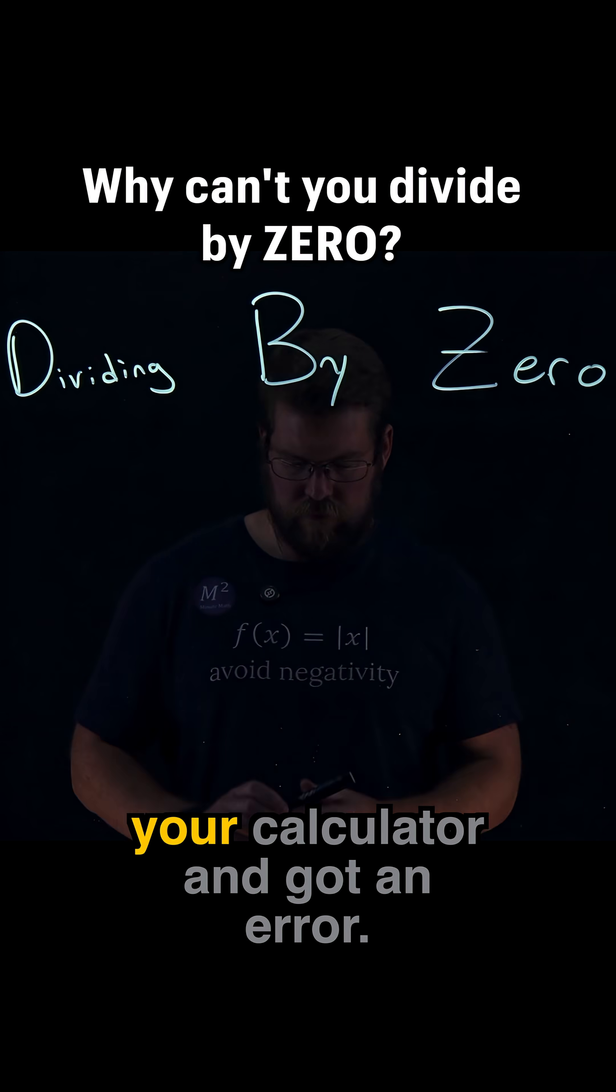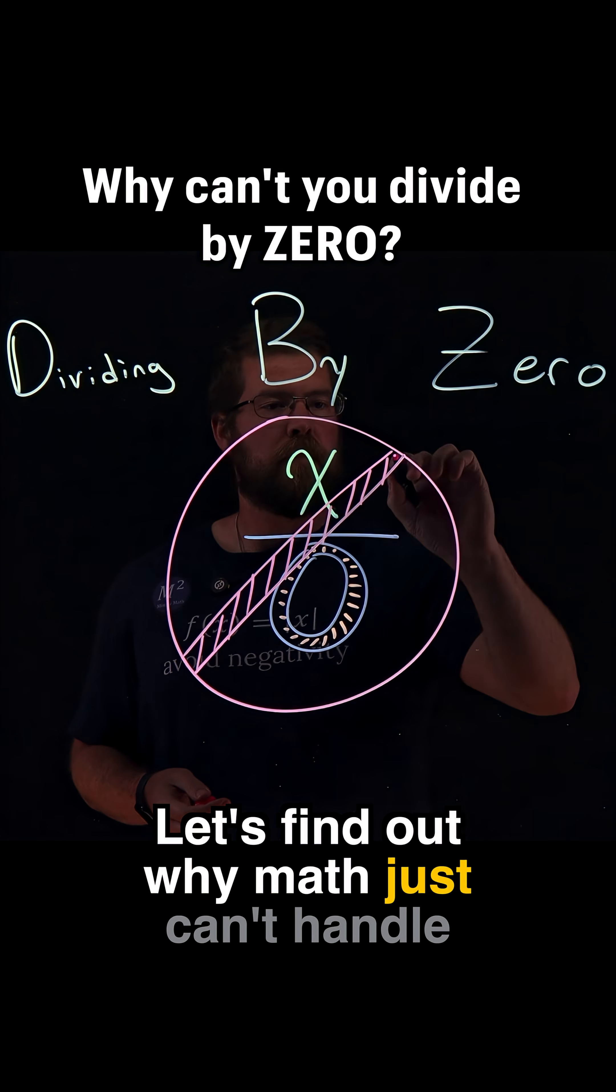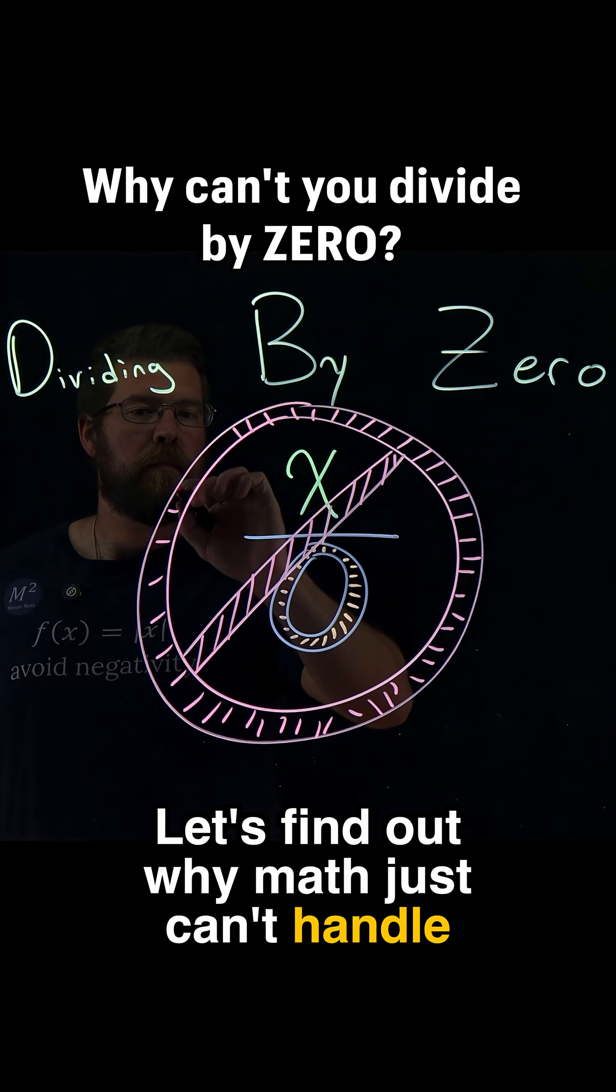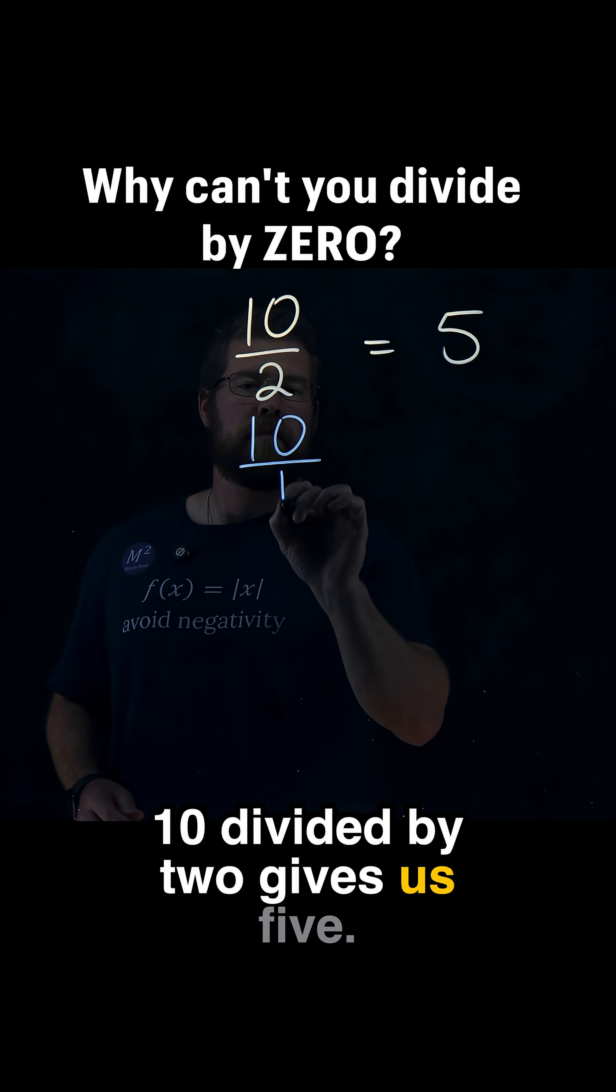Ever tried dividing by zero on your calculator and got an error? Let's find out why math just can't handle it. Let's start simple. Ten divided by two gives us five.